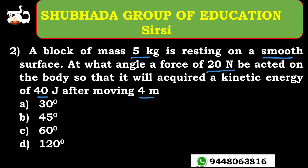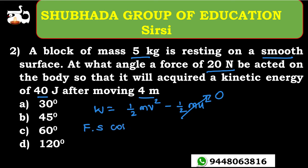We have the formula: work done equals the change in kinetic energy, that is one-half mv² minus one-half mu². Since the initial velocity is zero, the half-mu² term becomes zero. So work done equals F × s × cos θ, which should equal one-half mv². The force applied is 20 newtons and the displacement is 4 meters.